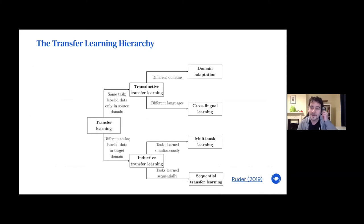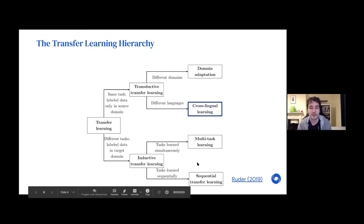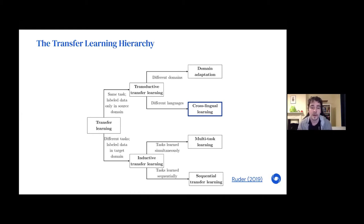To provide some additional context, I think it's useful to think of transfer learning across different languages in the broader context of other areas of transfer learning. We can divide transfer learning across two different dimensions based on the characteristics of the source and the target setting. In one setting, we're dealing with the same task in the source and the target setting. If we're trying to transfer between different domains, people have been studying that in NLP as domain adaptation. Or when we're transferring between different languages, we can call that cross-lingual transfer learning, which is going to be the main subject of this talk.